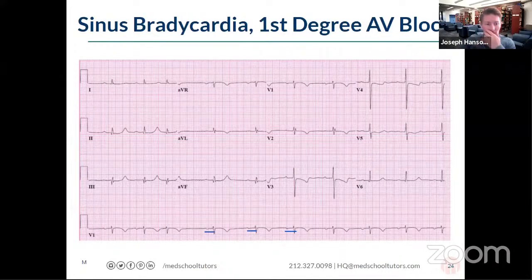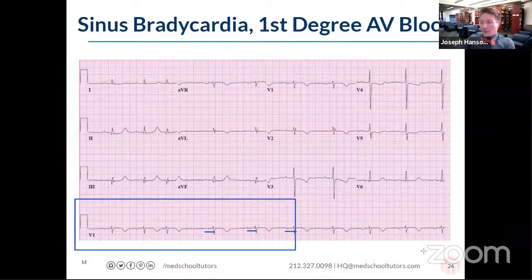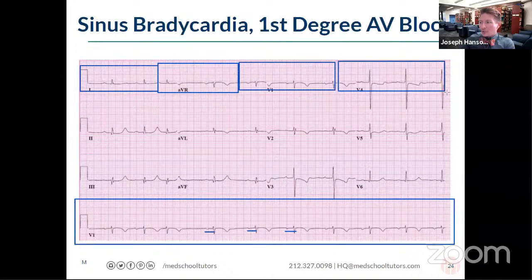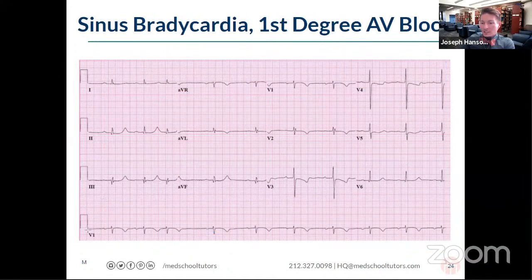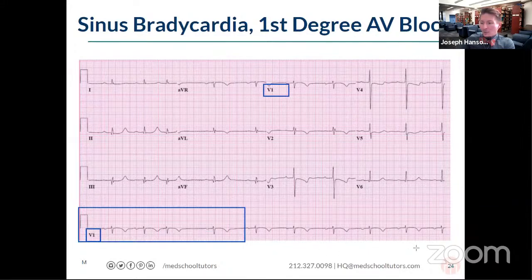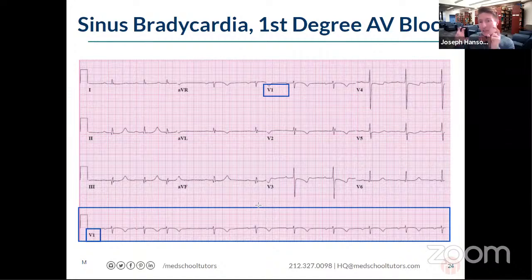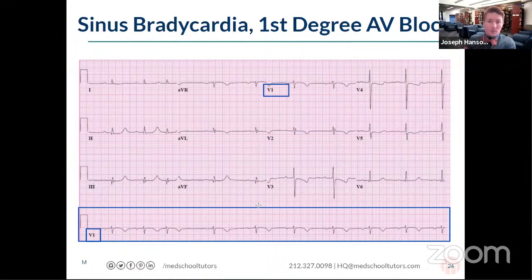The P waves in lead V1 can be mostly inverted and not the easiest to see. On the exam, you can zoom in on the picture for any EKG, which makes it easier. Having a rhythm strip at the bottom is critical — without it, it would be difficult to assess heart rate beyond the big box strategy. If a question only provides V1 as the rhythm strip, there's presumably a reason it's easier to read than lead two for that particular tracing.